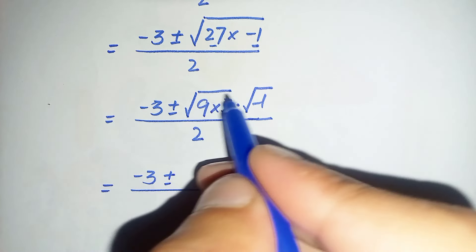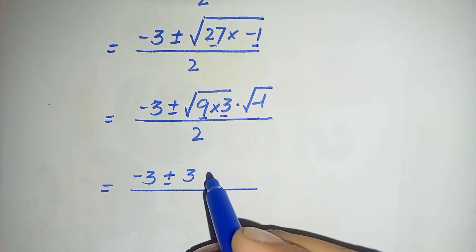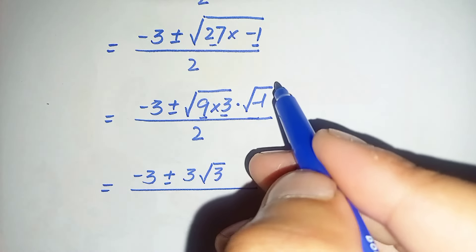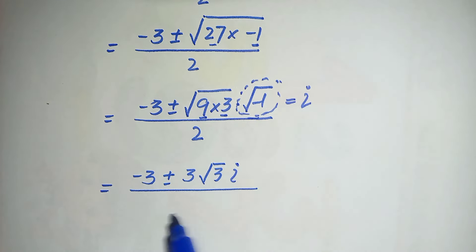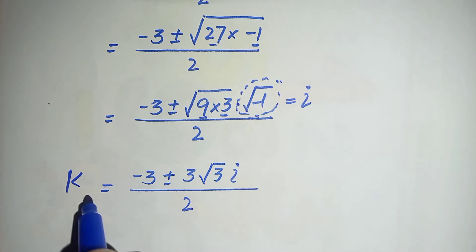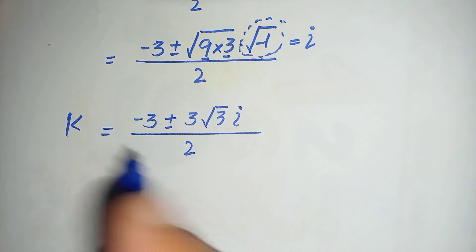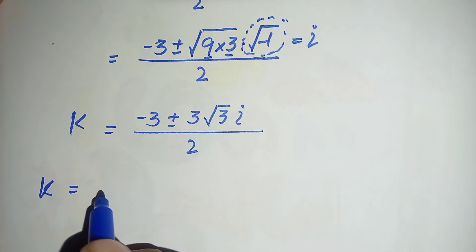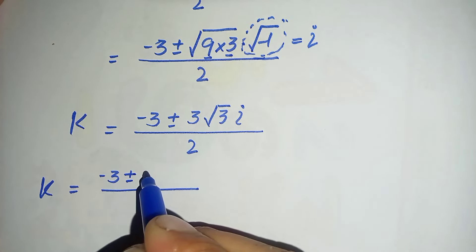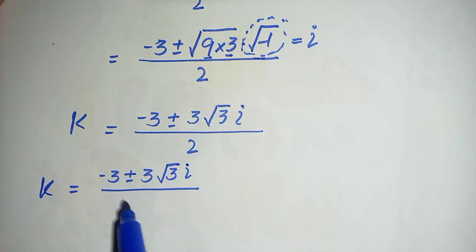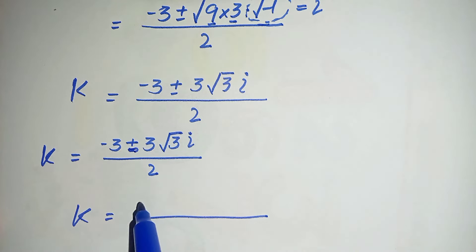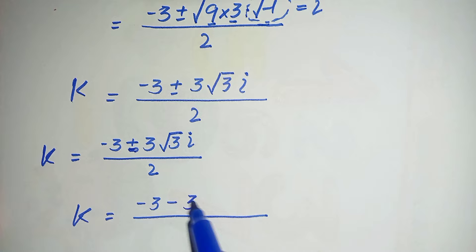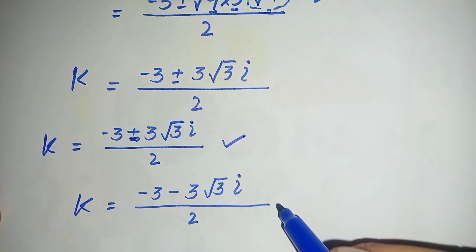Splitting the square root over 9 and 3: square root of 9 is 3, and square root of 3 remains. The square root of negative 1 is the complex identity iota, so we replace it with i. This gives k equals negative 3 plus or minus 3 times square root of 3 times i, divided by 2. So the two complex values are: k equals negative 3 plus 3 root 3 i, divided by 2, and k equals negative 3 minus 3 root 3 i, divided by 2.